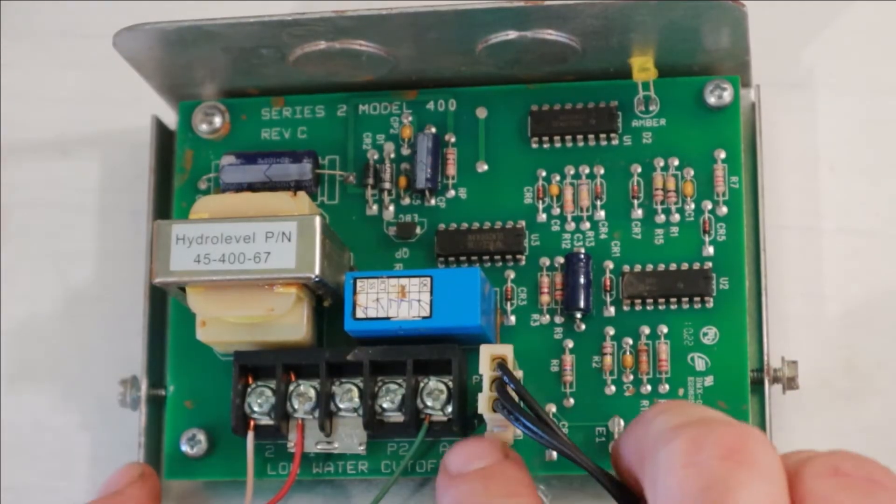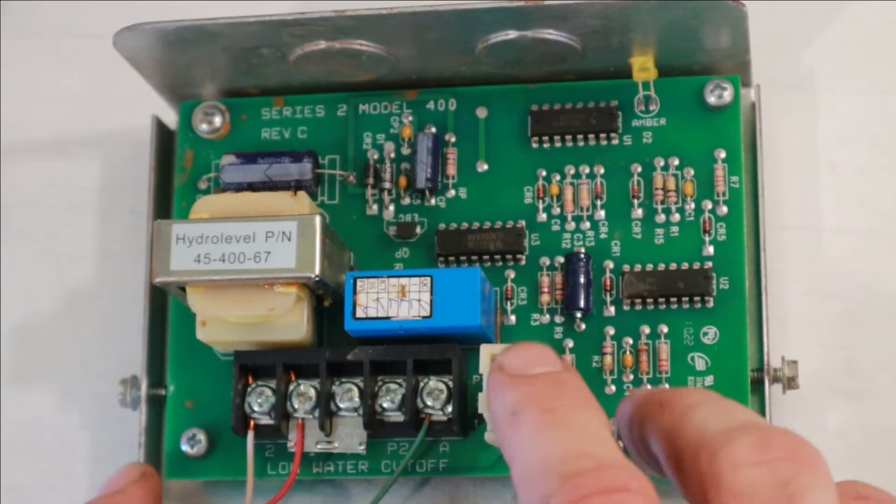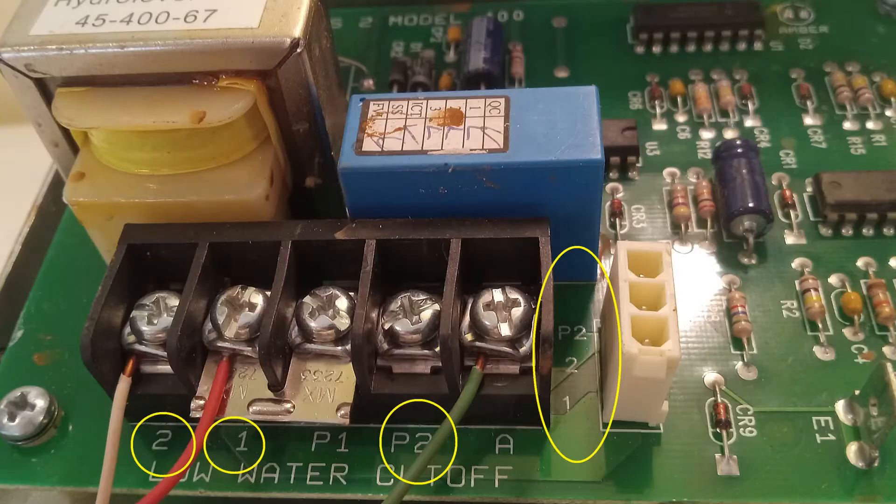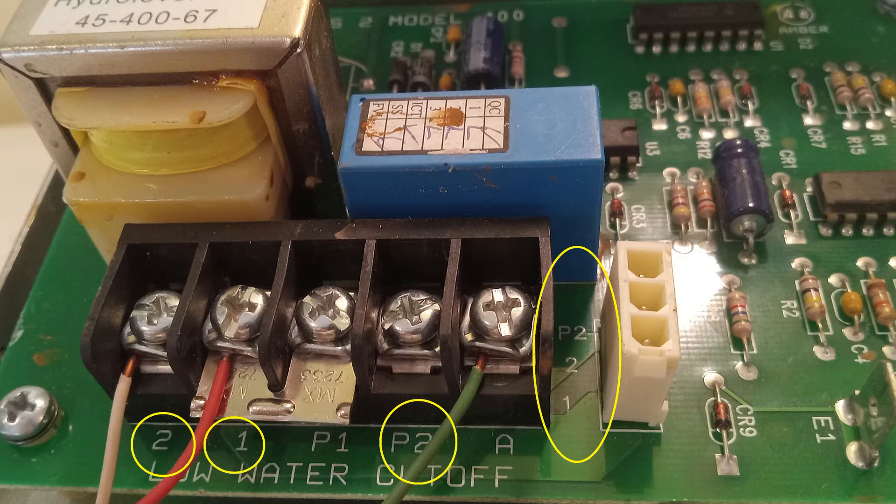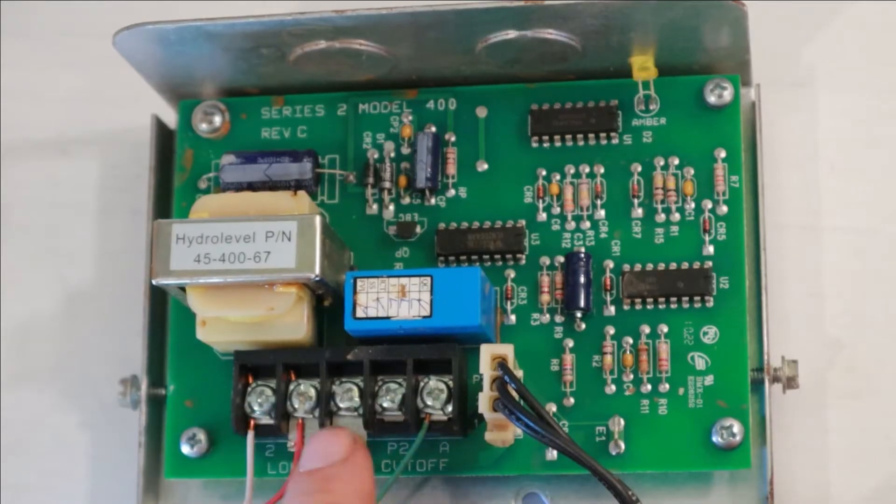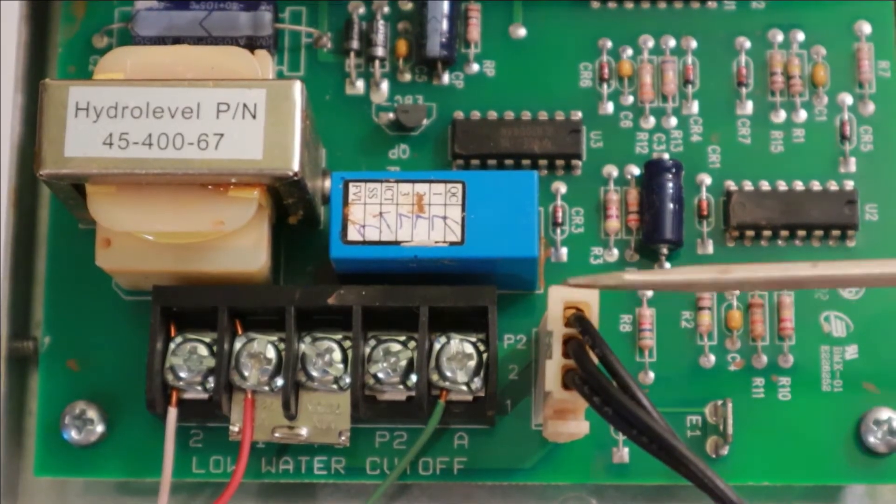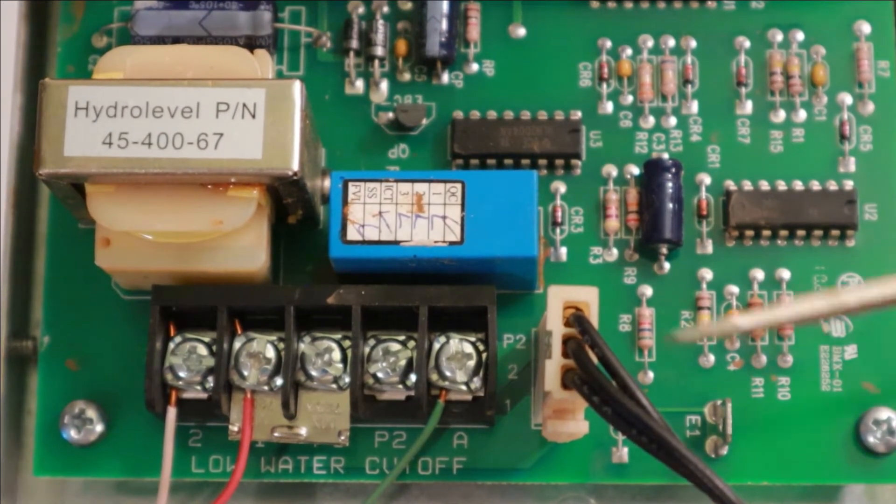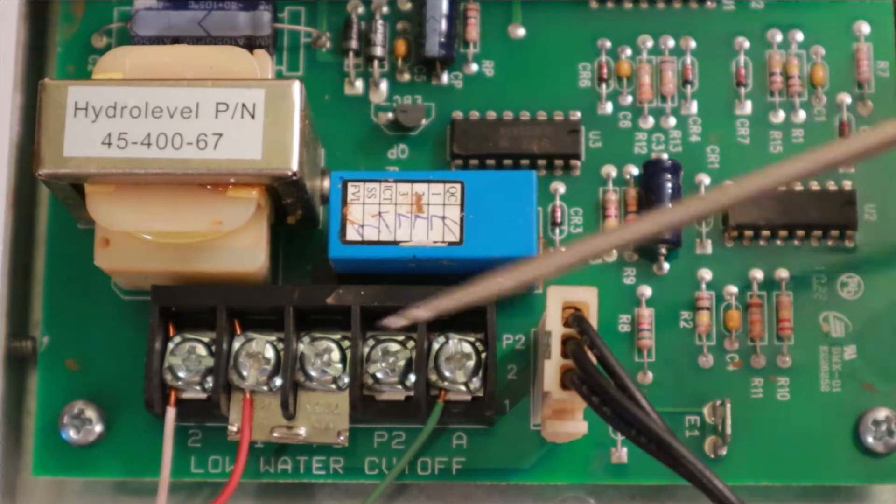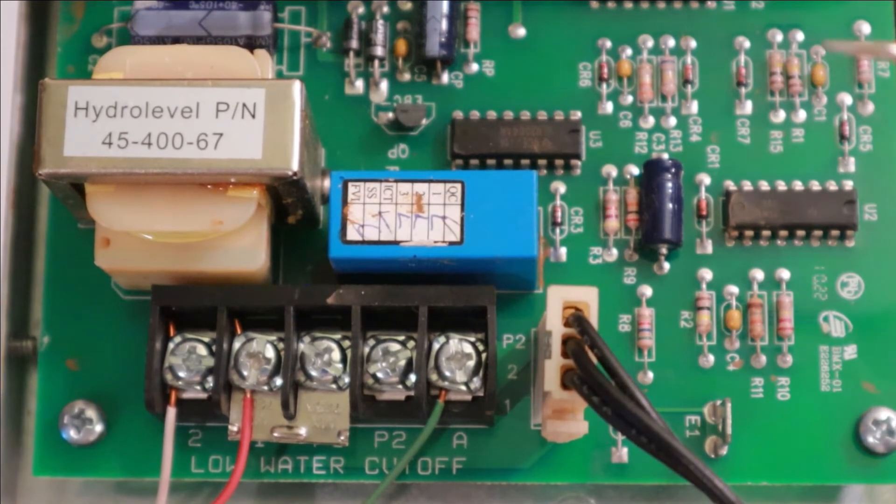Now, if you were to look right on the board here next to this Molex plug, you're going to see one, two, and P2 written there. You're also going to see corresponding terminals. You're going to see one, two, and P2 right here. Now, some of these systems may not have a Molex plug like this. It might just be three black wires going straight to the terminals, but it basically works the same way.